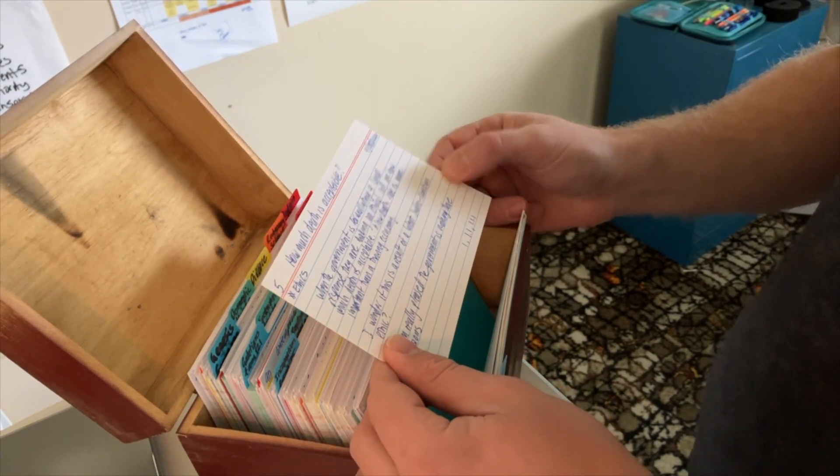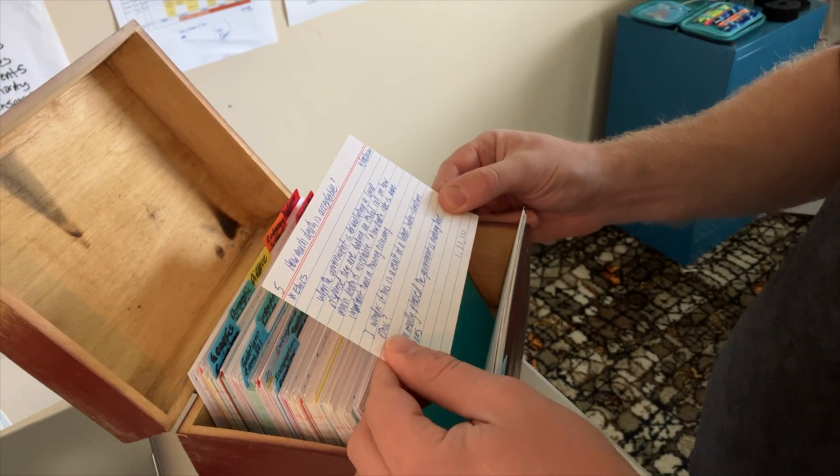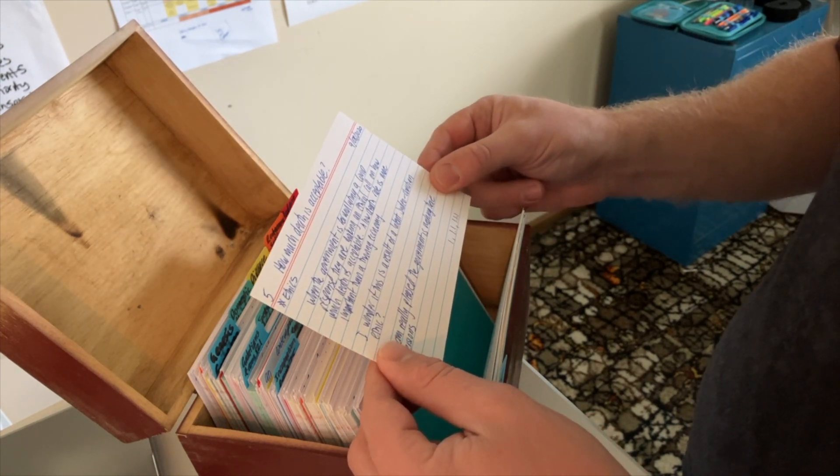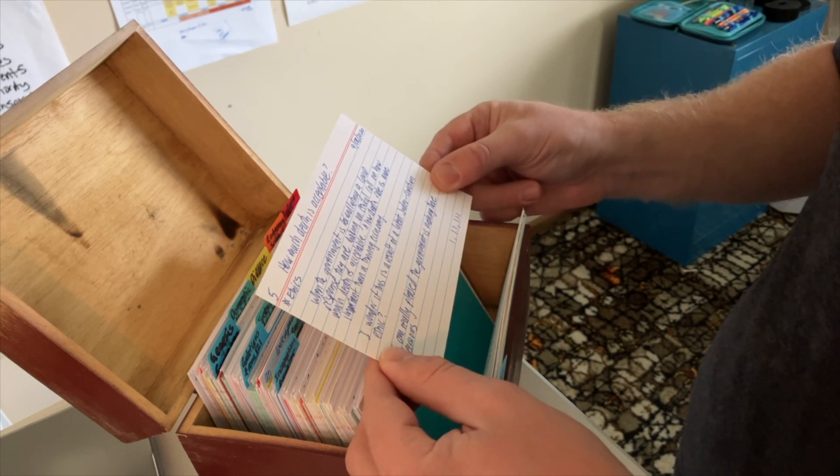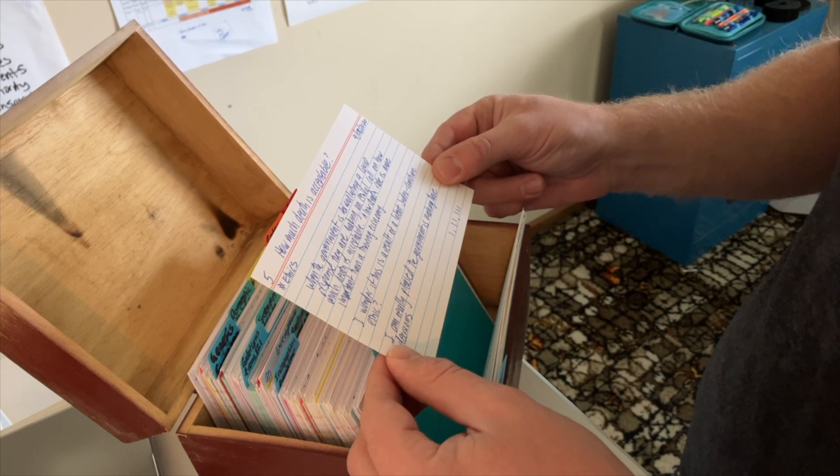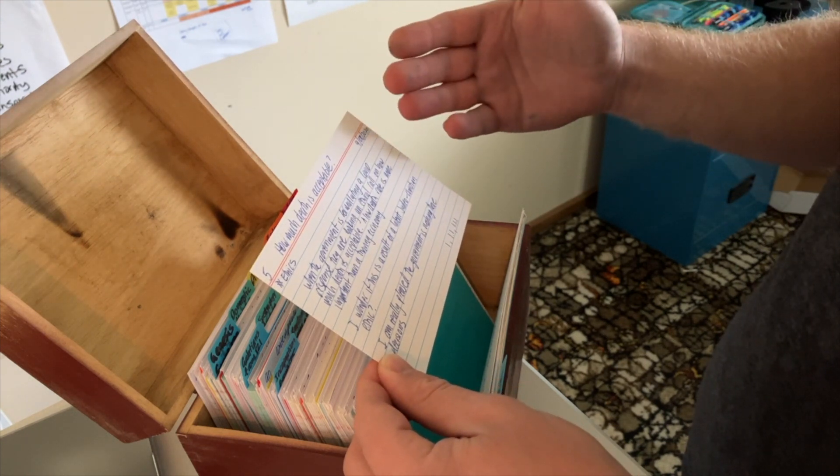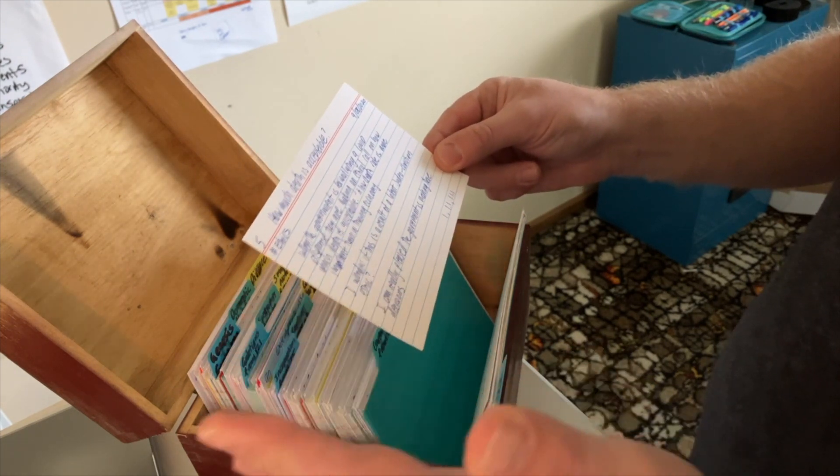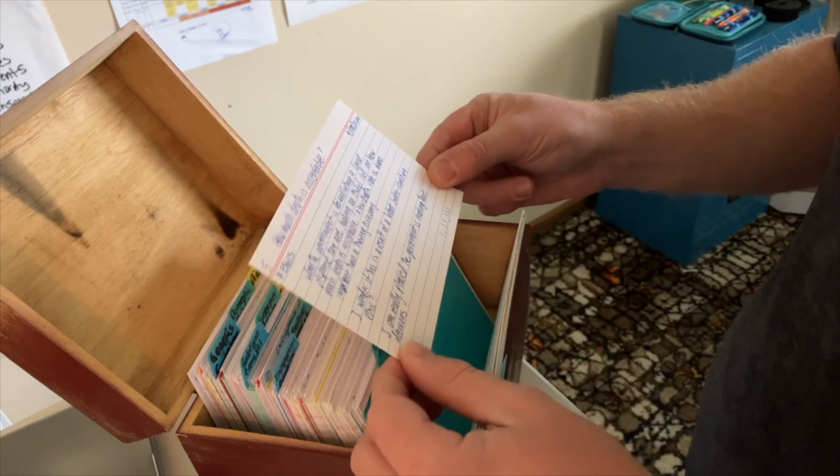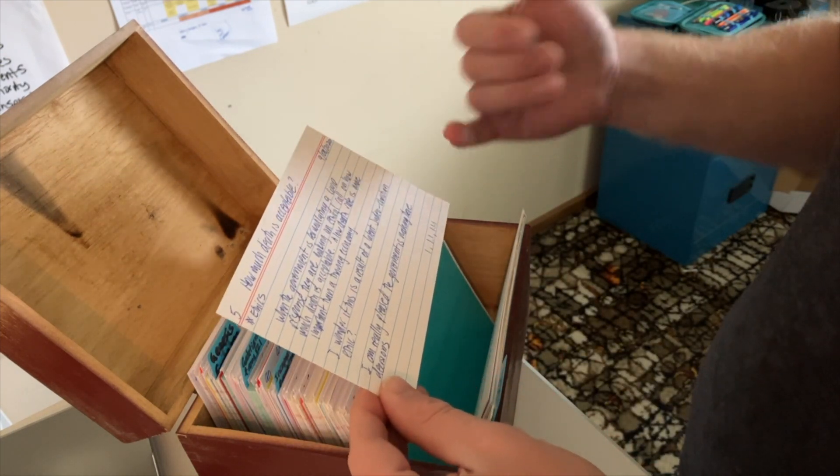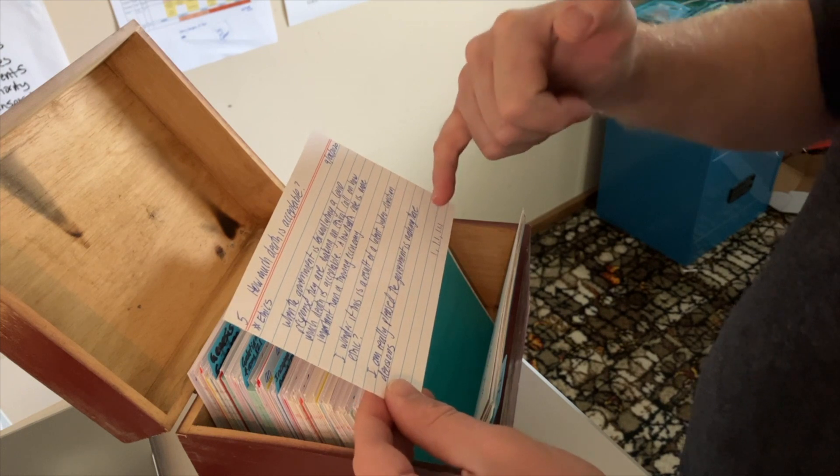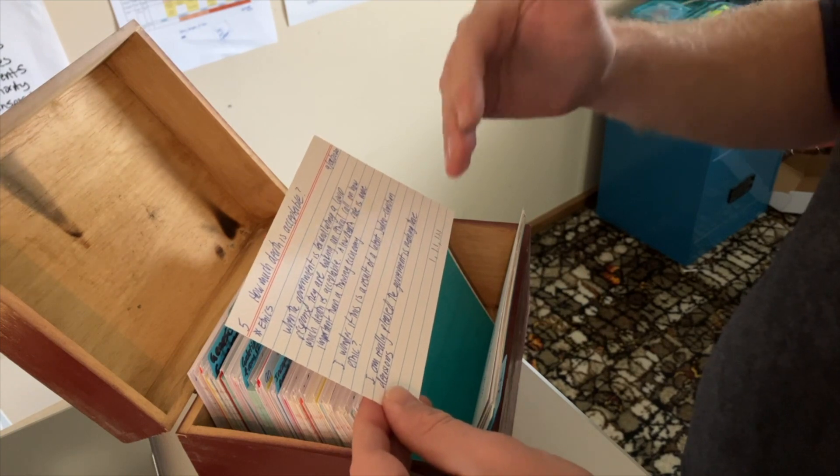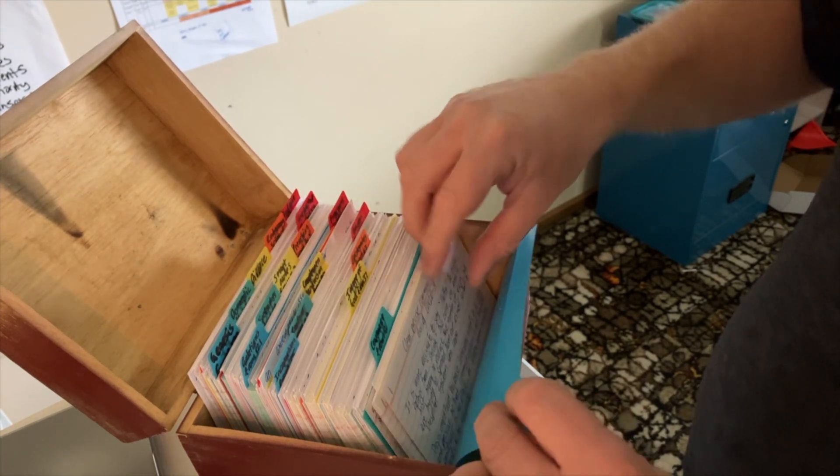Card number five I've called how much death is acceptable. When the government is formulating a COVID response they are making an ethical call on how much death is acceptable. A low death rate is more important than a thriving economy. I wonder if this is a result of a latent Judeo-Christian ethic. I'm really pleased the government is making these decisions. I'd want a government that's going to keep me alive. I've got a link back to card one but I've also linked it to card 1.1 and 1.1.1.